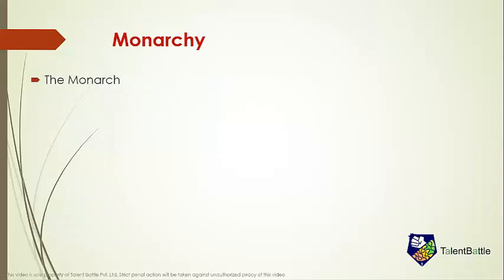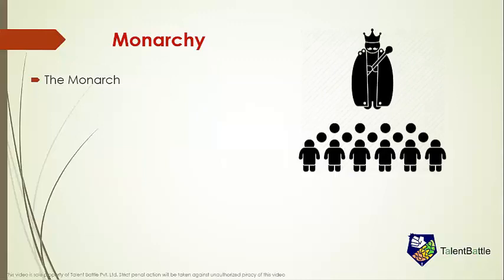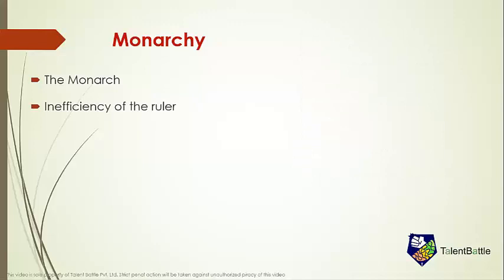Now let's see what monarchy is. The supreme power is bestowed on an individual and can be absolute or nominal. The head of state often holds the title for life or until abdication. The leader, called the monarch, is wholly set apart from all other members of the state and typically makes all the laws and decisions. Regarding inefficiency of the ruler — the ruler may form policies beneficial for himself but not for the country, or may be incapable of performing duties efficiently, and still nothing can be done by the people. The system of inheritance can also lead to inefficiency, as the ruler and his generation have the security of their future whether they perform or not.